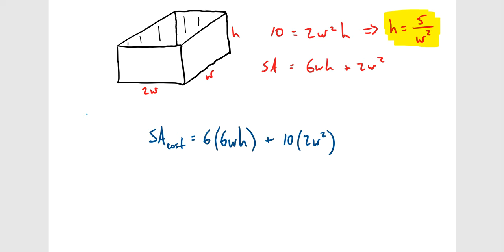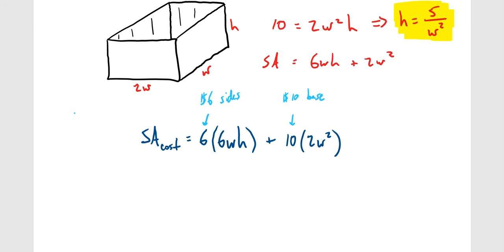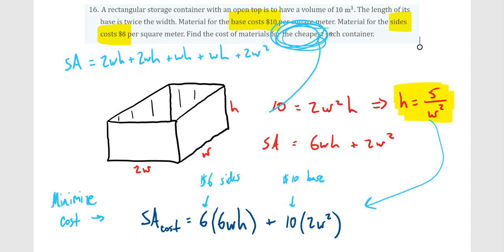We know what we're trying to find: the cost of materials, which relates to surface area, not volume. We need to minimize the cost, which means plugging H = 5/W² into the cost formula, taking the derivative, applying the first derivative test, and finding W. The problem says 'cheapest,' so we are minimizing.